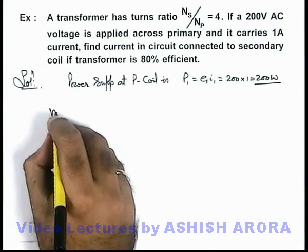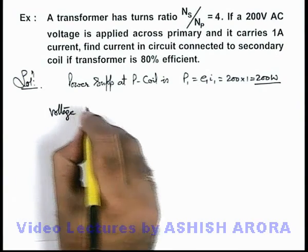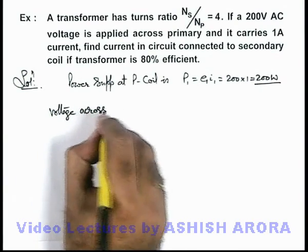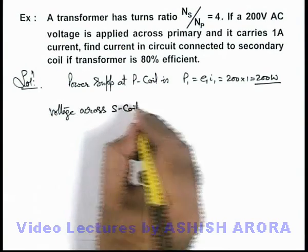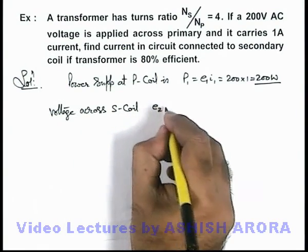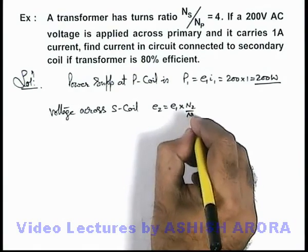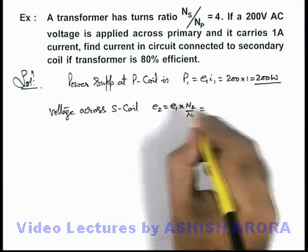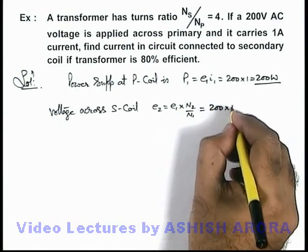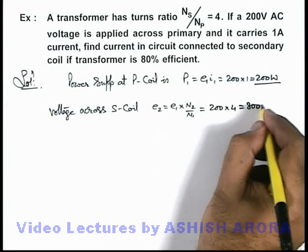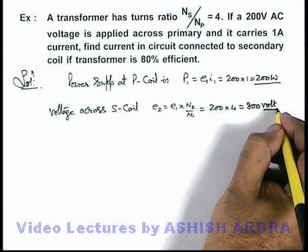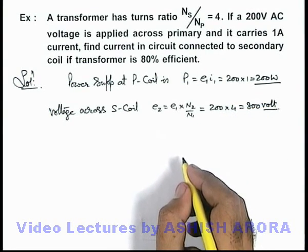If we calculate the voltage across the secondary coil, then E2 can be written as E1 multiplied by N2/N1. So here we can write it as 200 multiplied by 4, which is 800 volt. This is the potential difference which is available across the secondary coil.